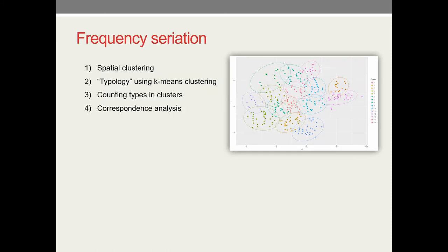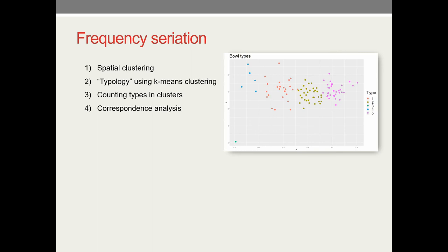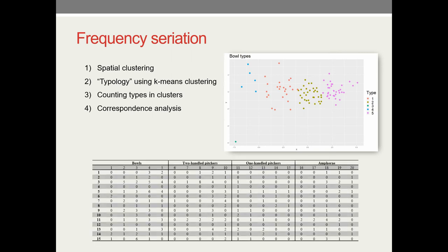Then we proceeded with the frequency seriation. We clustered the graves by their coordinates and we got 15 groups and we used again typology using k-means clustering. We counted the types in clusters and got some small assemblages. For example, spatial cluster 1 has three vessels of type 4 and so on. With this we could proceed with the correspondence analysis.